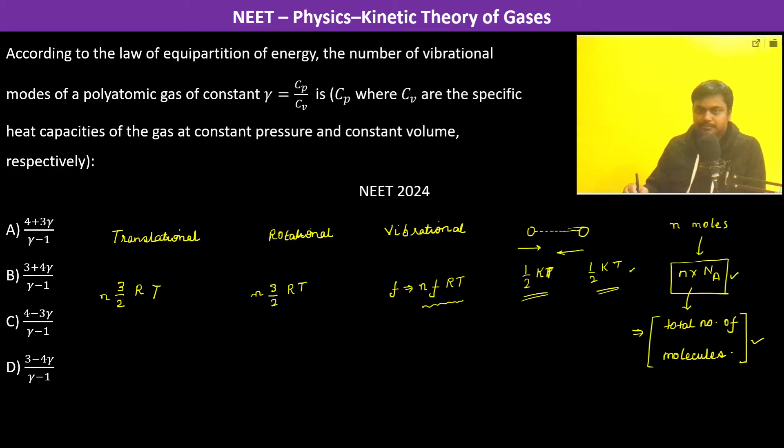C V, N C V R T will be the internal energy. So C V becomes 3 by 2 R plus 3 by 2 R plus F R, and C P becomes C V plus R.